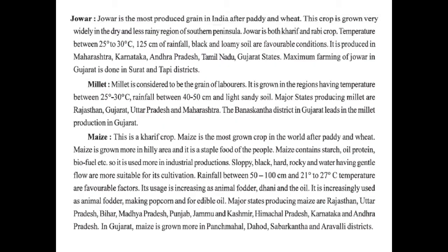The next crop is Juwar. Juwar is the most produced grain in India after paddy and wheat. This crop is grown very widely in the dry and less rainy regions of the southern peninsula. Juwar is both a kharif and rabi crop. Temperature between 25 to 30 degree Celsius, 125 cm of rainfall, and black loamy soil are favorable conditions. It is produced in Maharashtra, Karnataka, Andhra Pradesh, Tamil Nadu, and Gujarat. Maximum farming of Juwar in Gujarat is done in Surat and Tapi.